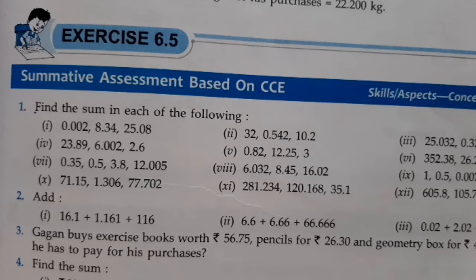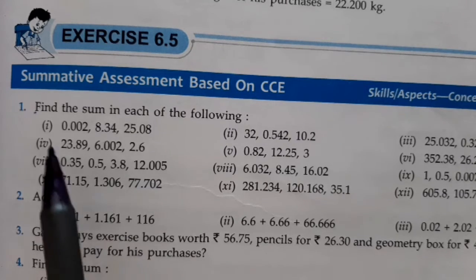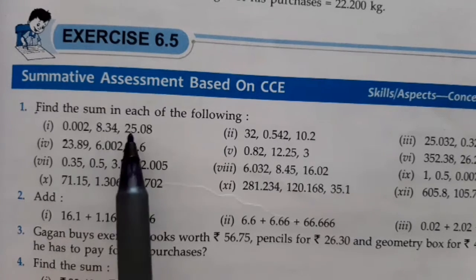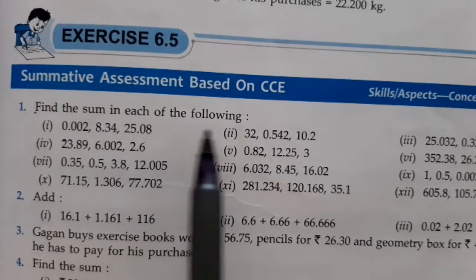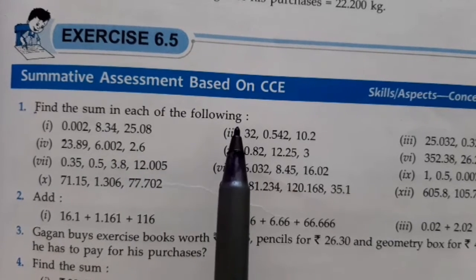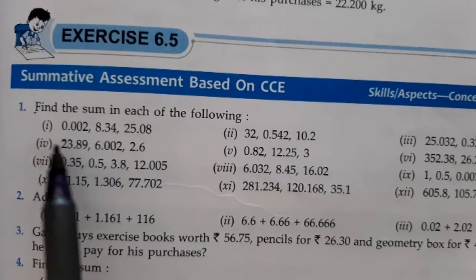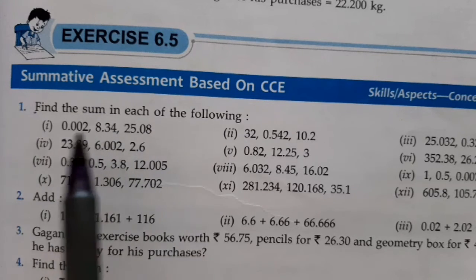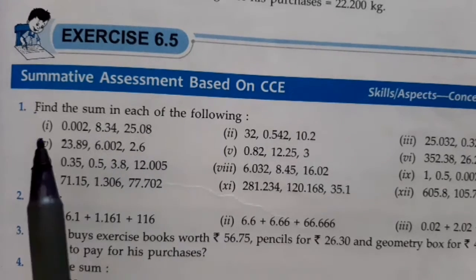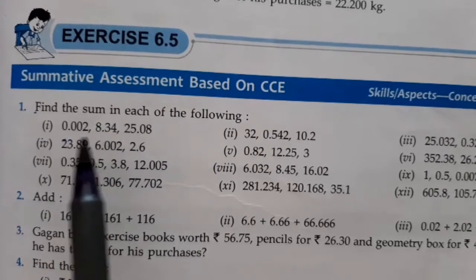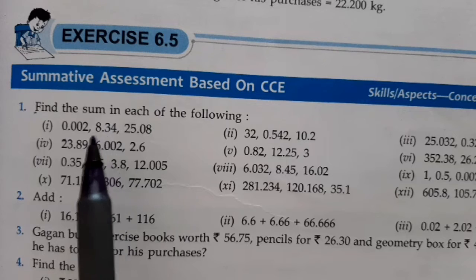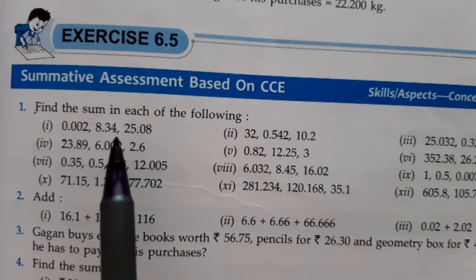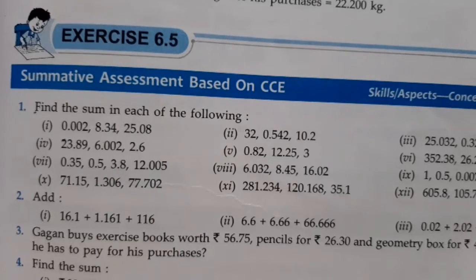Question number 1. Find the sum in each of the following. In question number 1, we have to find the sum — that is, we have to add these three decimal numbers: 0.002 plus 8.34 plus 25.08.